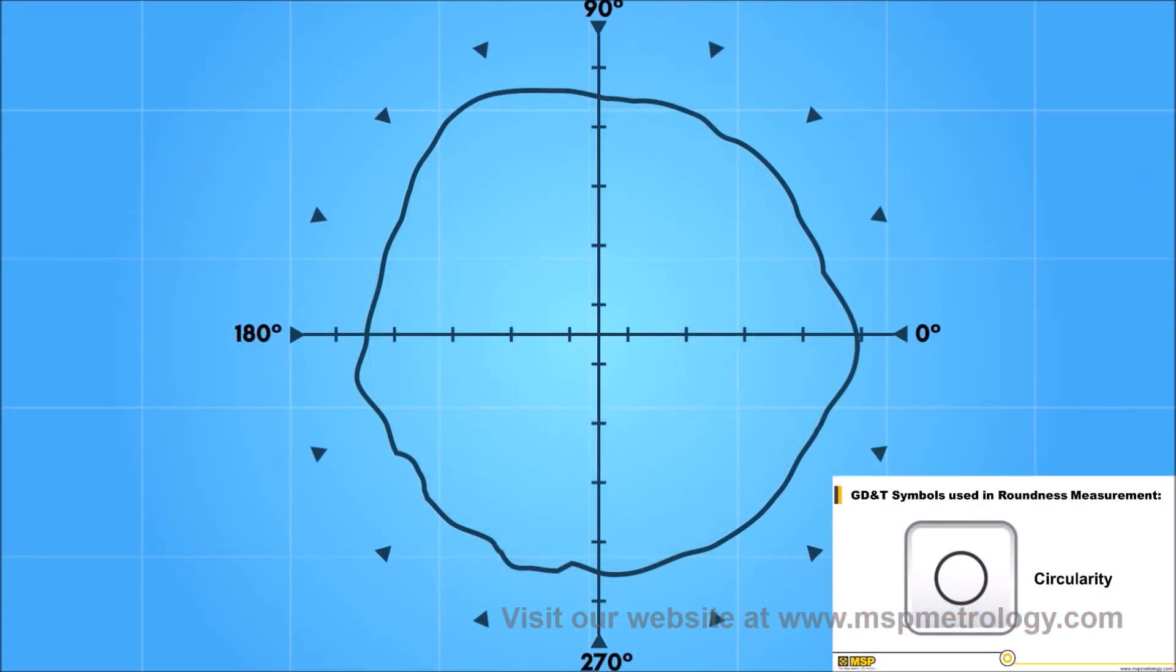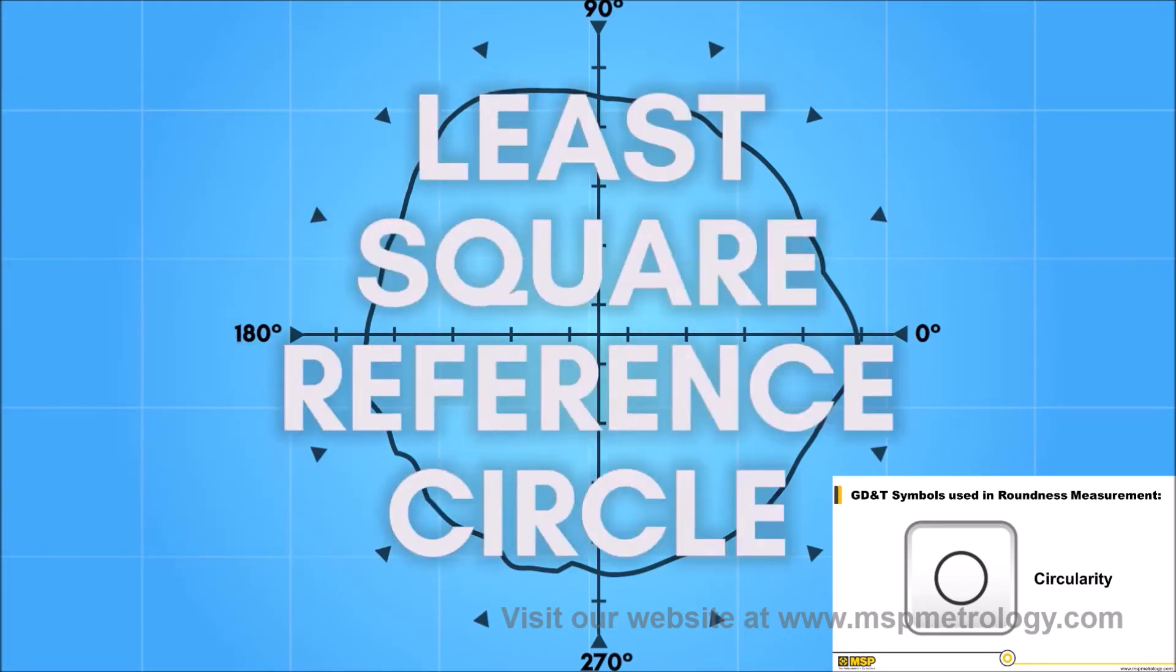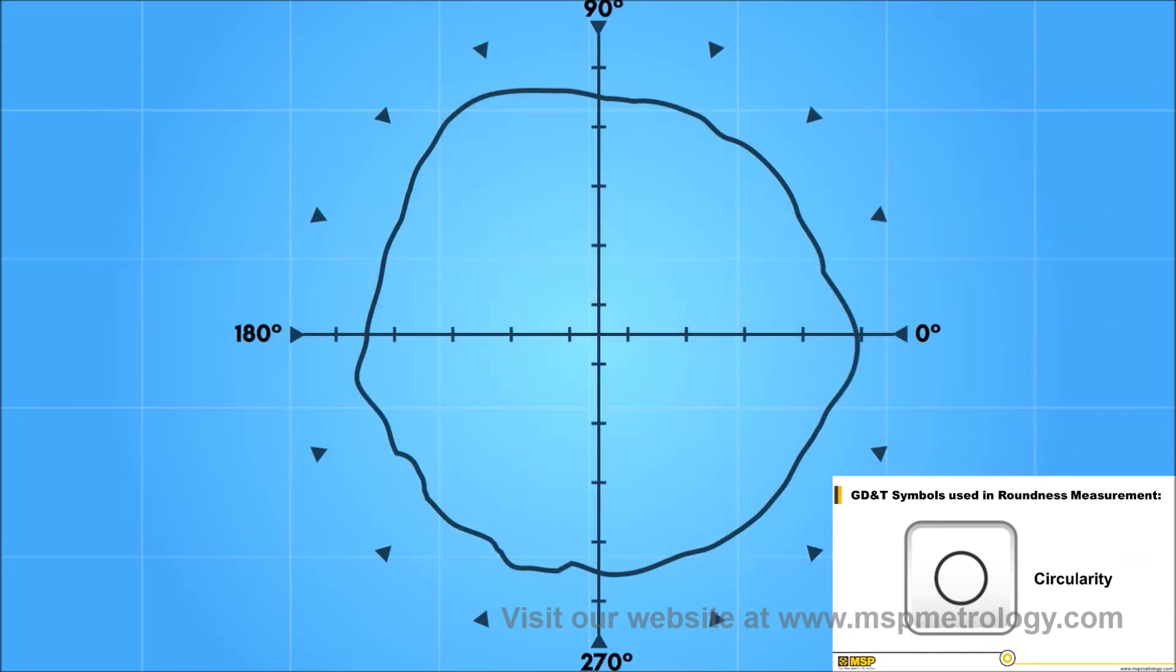This graph is then used to calculate a reference circle and its deviation from reference roundness. The least square reference circle, the most commonly used reference circle, is a circle that equally divides the area between the inside and outside of the reference circle. Out of roundness is then presented in terms of the maximum displacement from the reference circle, the difference between the highest peak to the lowest valley.